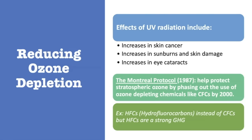Since the ozone hole was discovered, we have figured out a few ways to try to prevent further worsening of this problem. One of them was to get rid of CFCs as much as possible. This was done through the Montreal Protocol, written in the 80s, to help protect stratospheric ozone from further depletion by phasing out CFCs and replacing them with other chemicals used as refrigerant aerosol propellants. One of those is HFCs, or hydrofluorocarbons. They don't cause ozone depletion, but they are very strong greenhouse gases, meaning they still retain heat in the atmosphere.